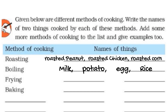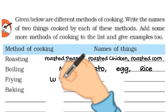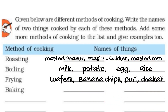Frying is the process in which we heat oil in a frying pan, and when the temperature of the oil is good enough, we fry the food items in that oil. Fried items include wafers, potato chips, banana chips, poori, and chakli — these are Indian dishes we eat by frying them.